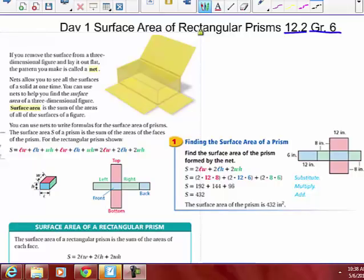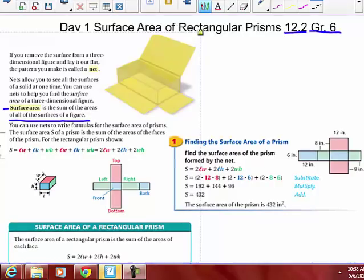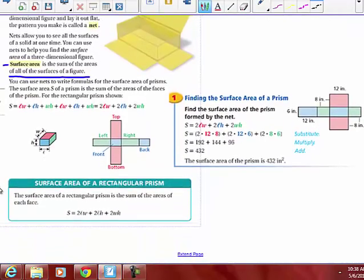Nets allow you to see all the surfaces of a solid at one time. You can use nets to help you find the surface area of the three-dimensional figure. Surface area is the sum of all the areas of the surfaces of a figure. All the faces that you see, those surfaces, you're going to find the area and add it all up to get the total surface area of the 3D shape.